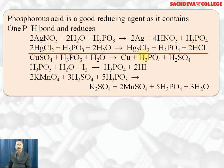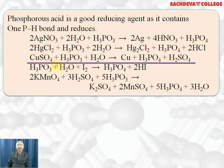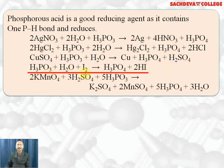Mercury chloride is reduced to mercurous chloride by H₃PO₃ in aqueous solution; H₃PO₃ itself gets oxidized to H₃PO₄ and 2 HCl is formed. Copper sulfate gets reduced by phosphorous acid in aqueous solution to copper, and H₃PO₄ plus H₂SO₄ is formed. H₃PO₃ also reduces iodine to iodide ion and itself gets oxidized to H₃PO₄: H₃PO₃ + H₂O + I₂ → H₃PO₄ + 2 HI.